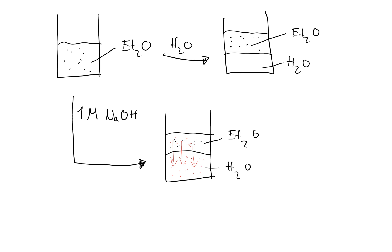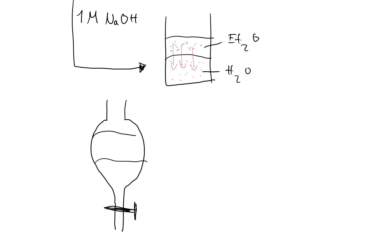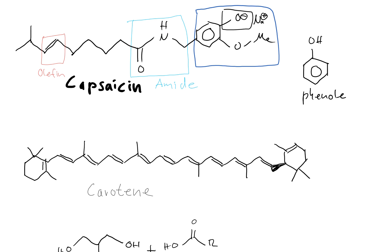In practice, you would transfer the mixture into a separatory funnel and drain off the aqueous layer into a separate vessel. You would then wash the diethyl ether three or four times with your one molar sodium hydroxide solution. In this way, we have achieved the separation of the capsaicin from the other molecules using the acid-base reaction of capsaicin.